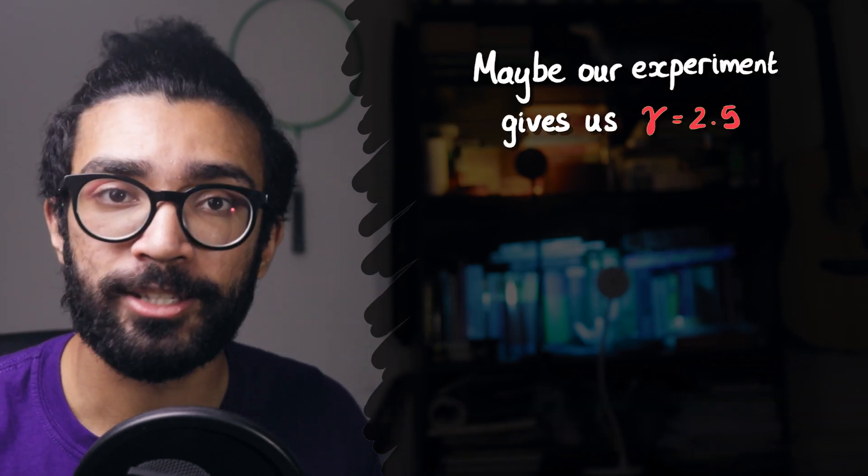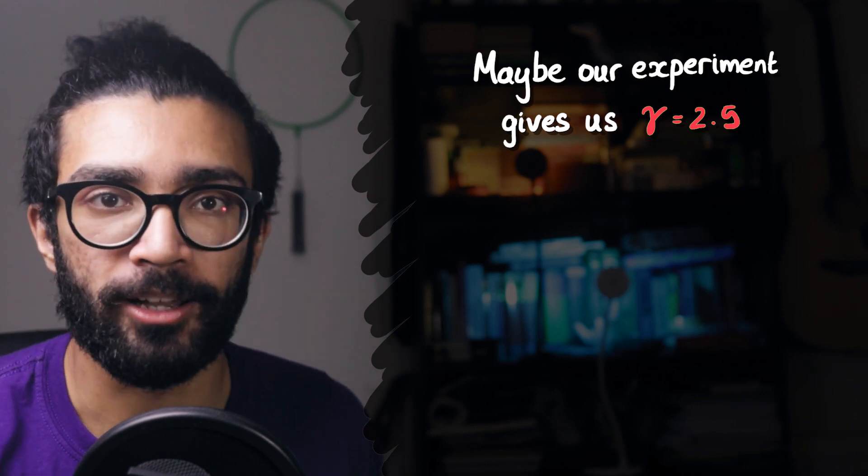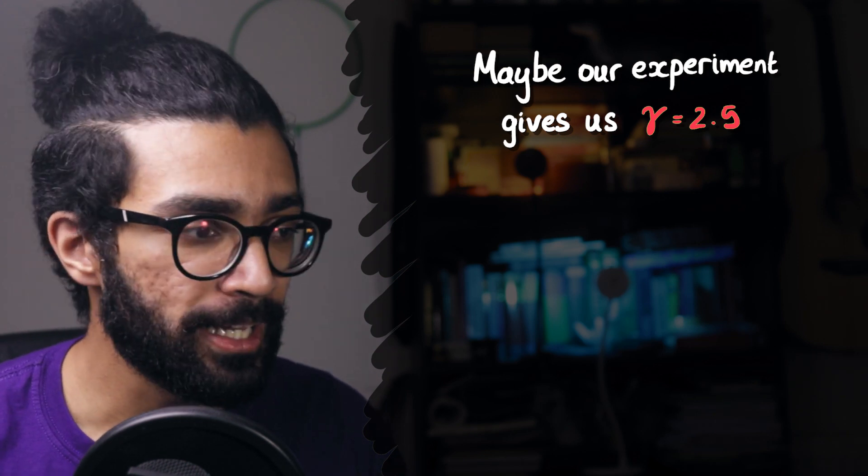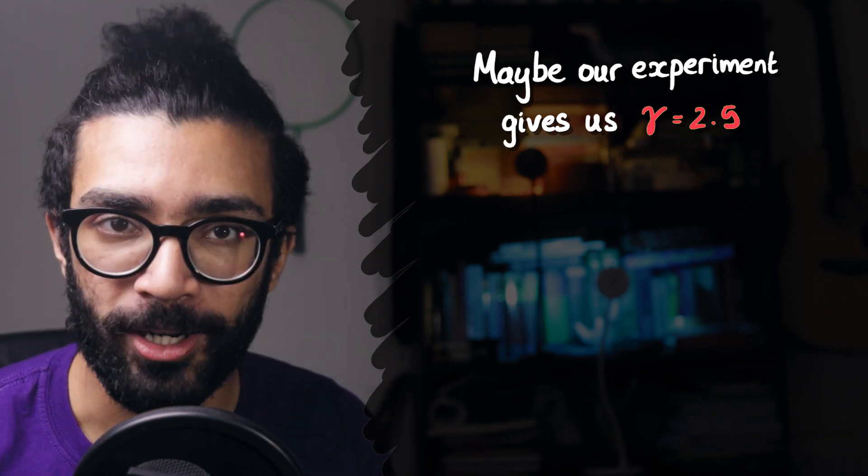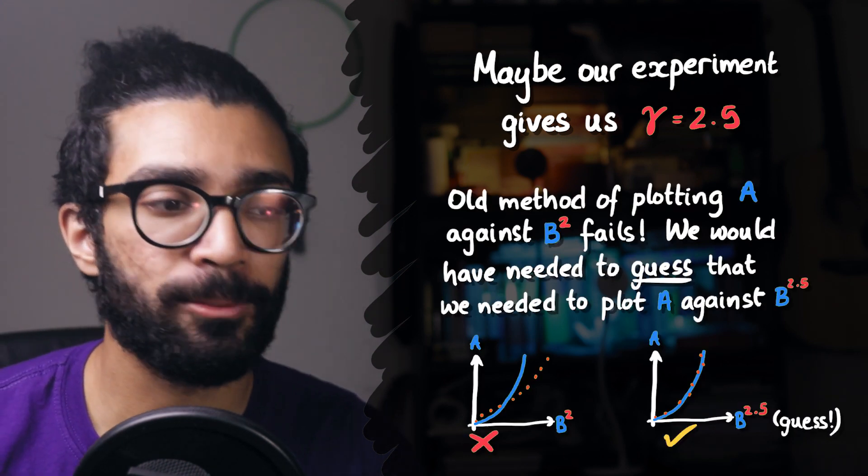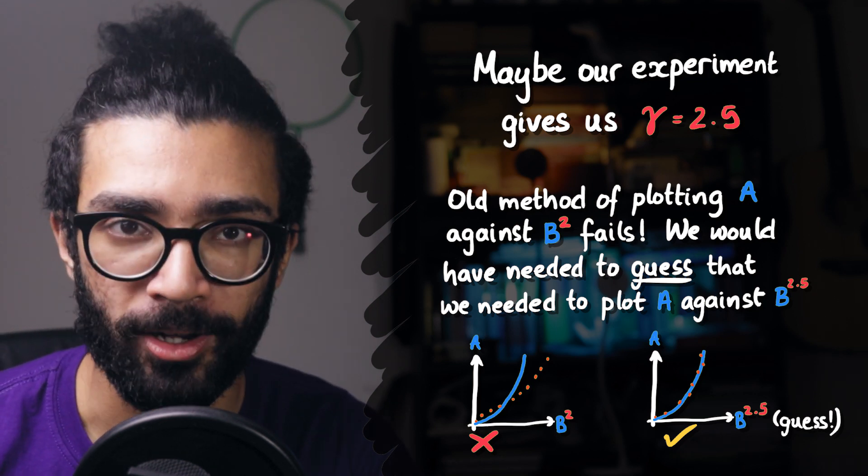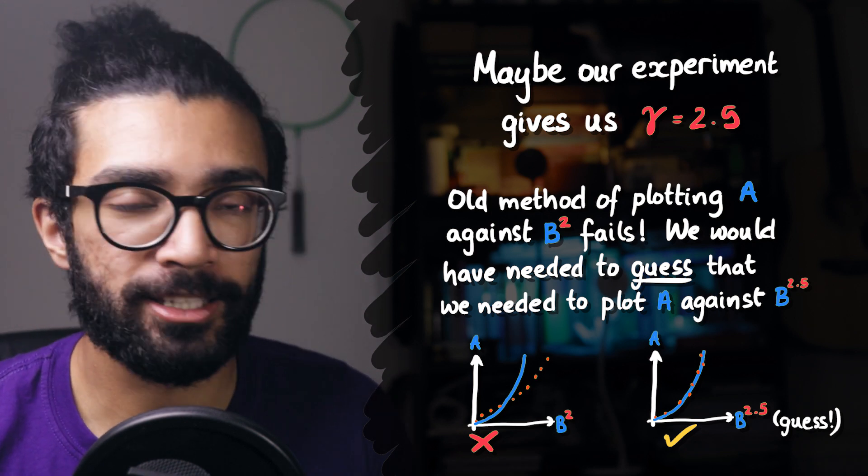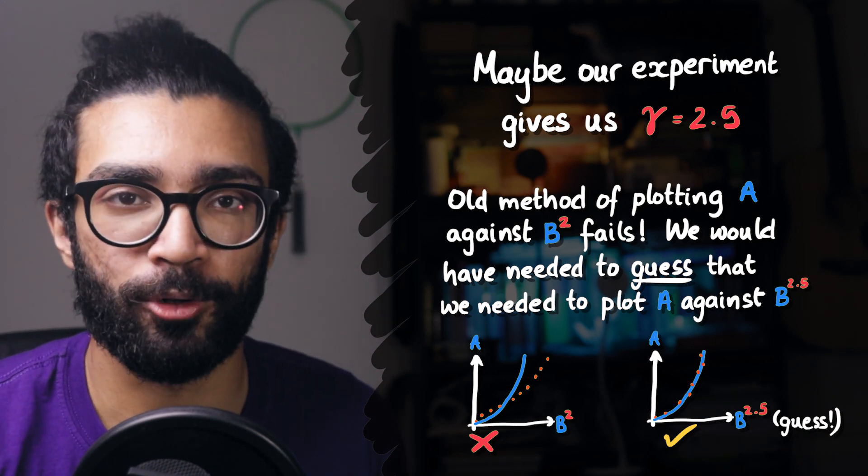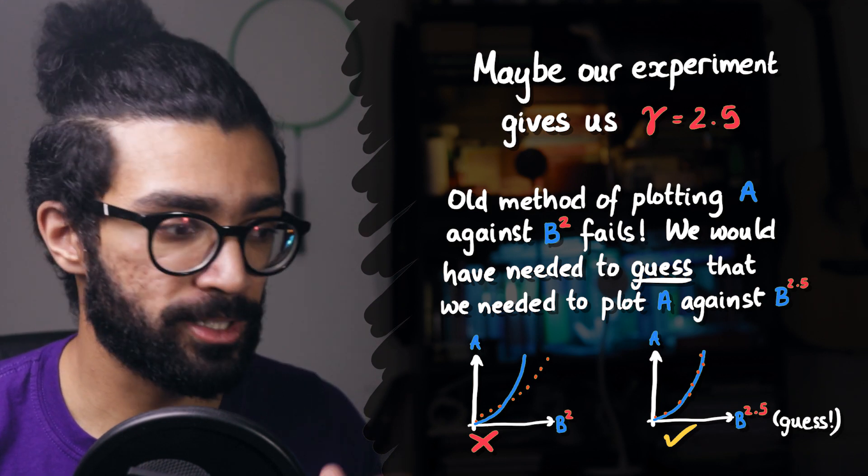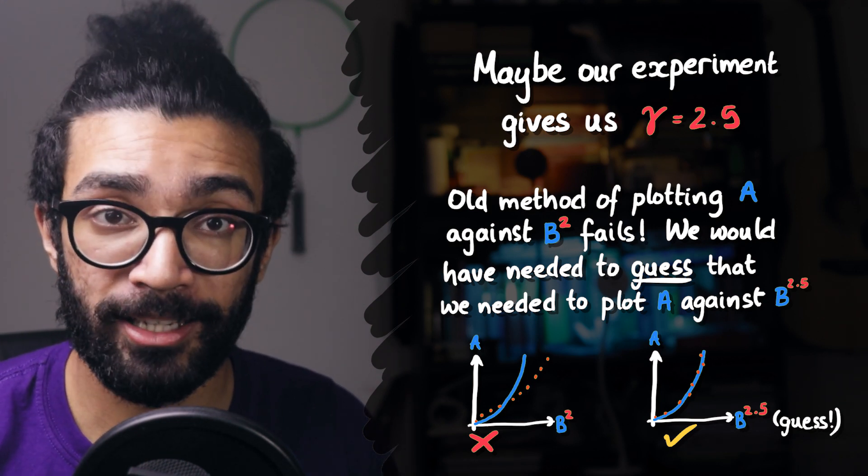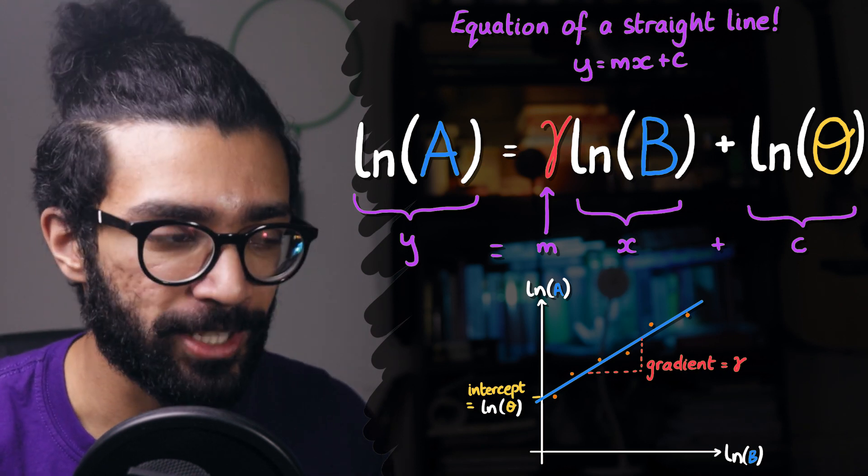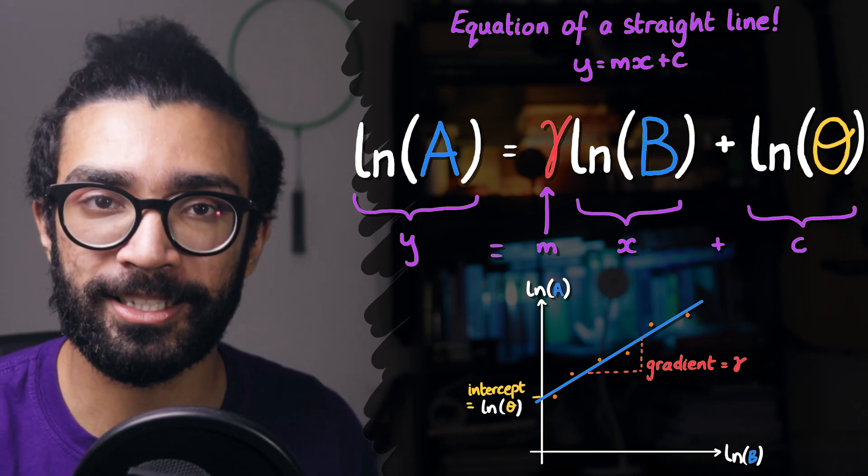And for all we know, this power could be like 2.5, or a non-integer value. And at this point we can see why this method is so powerful. It gives us a very good value for the power, whereas previously we would have had to make a plot and guess what power to plot, whether we plot A against B squared, or A against B cubed, or A against B to the power of 2.713456. And then we still wouldn't know if this data was the best that we could get in plotting a straight line relationship. Using logarithms just gives us these values, and we can then see how close they were to our theoretical predictions.